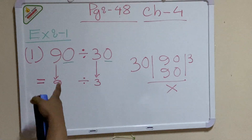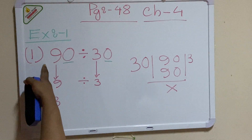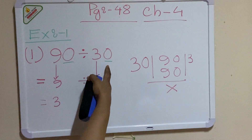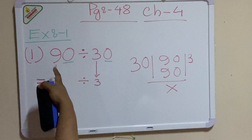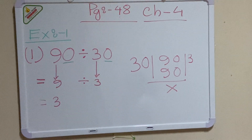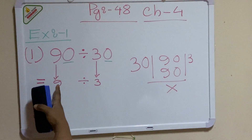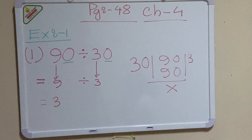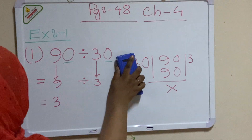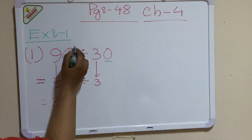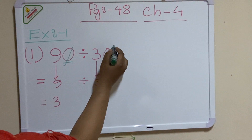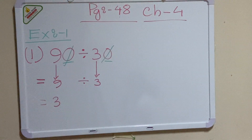Or if there are more zeros in one than the other, you can cancel the same number of zeros from both and write the remaining smaller number.